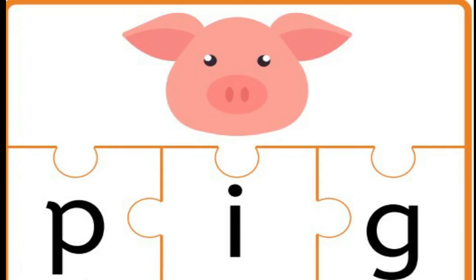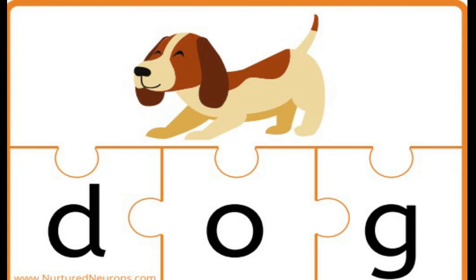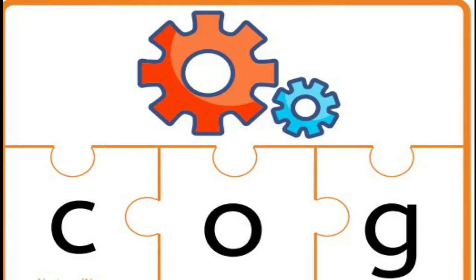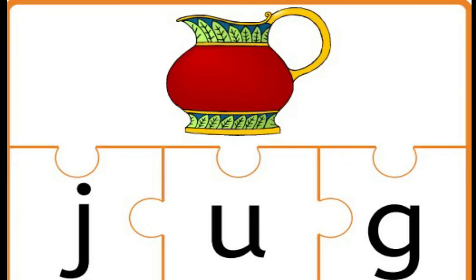P, i, g — pig. W, i, g — wig. D, o, g — dog. C, o, g — cog. R, a, g — rag. J, u, g — jug.